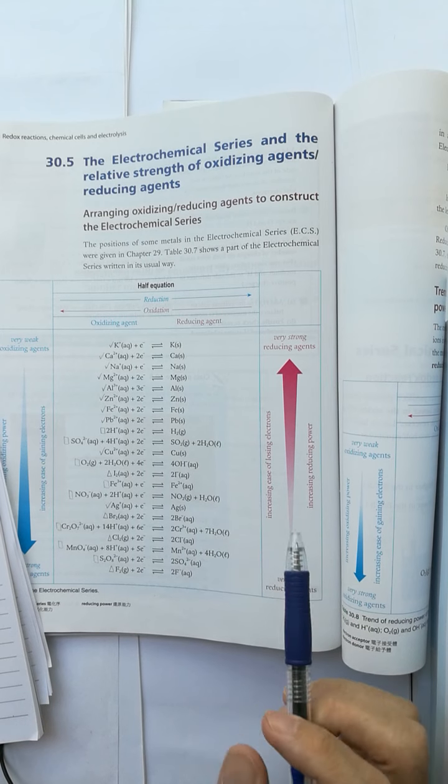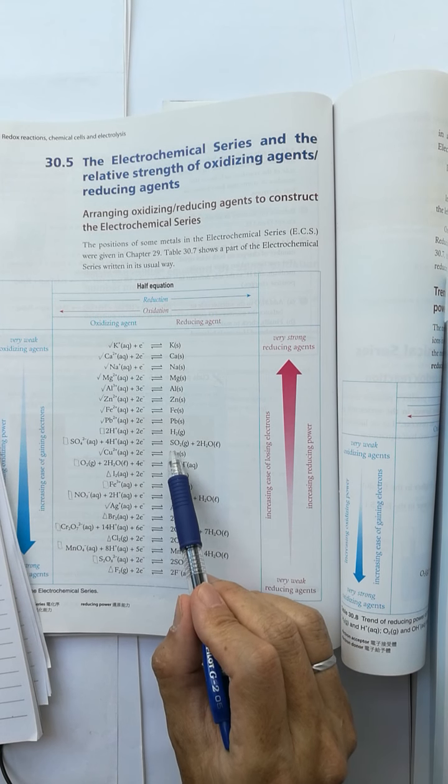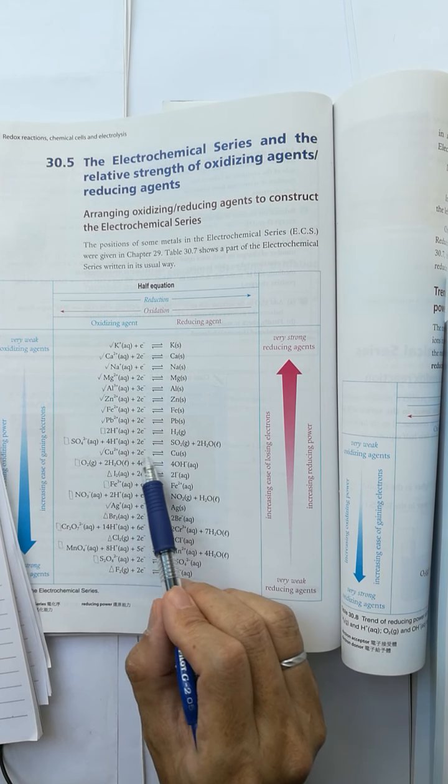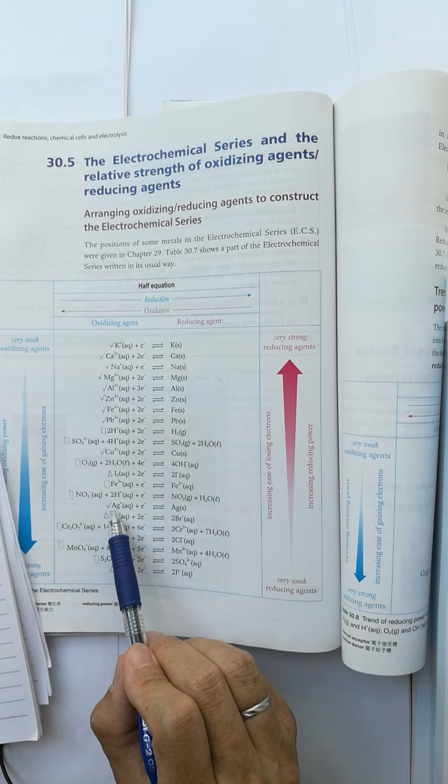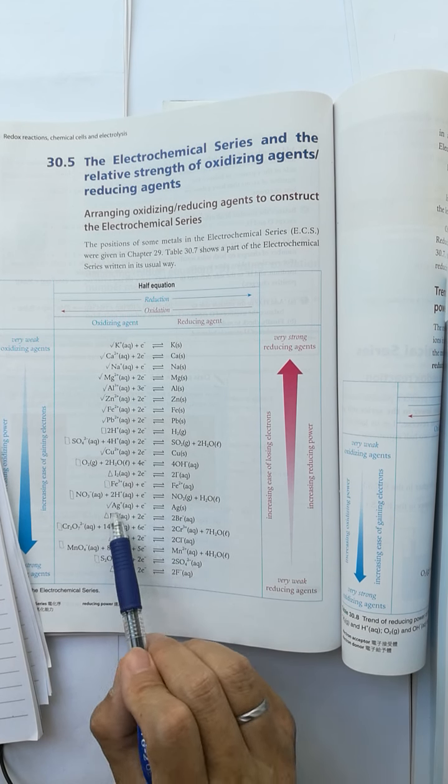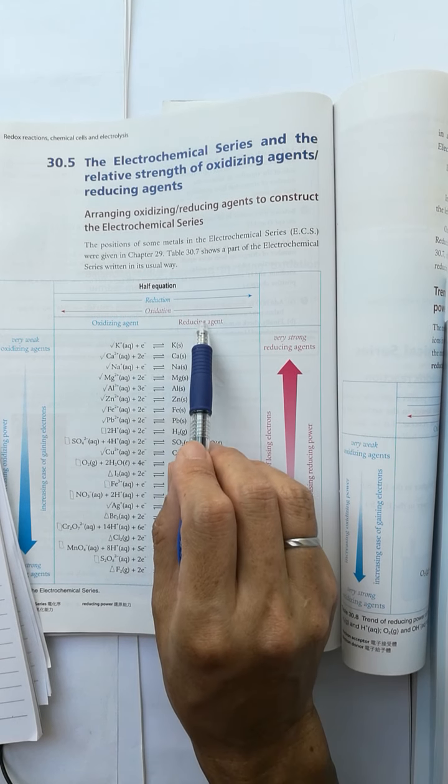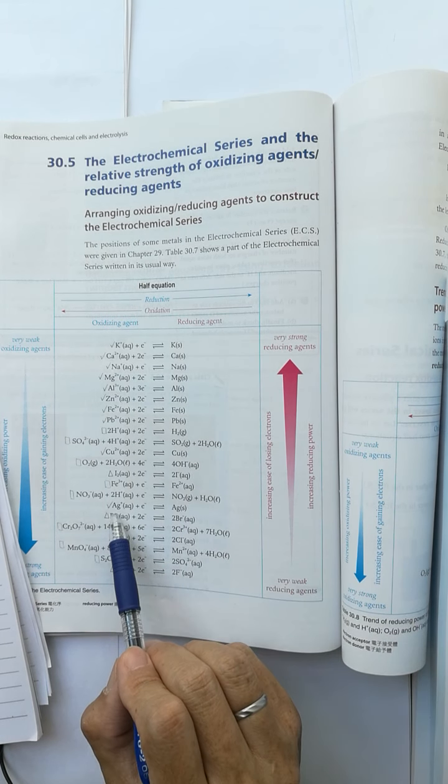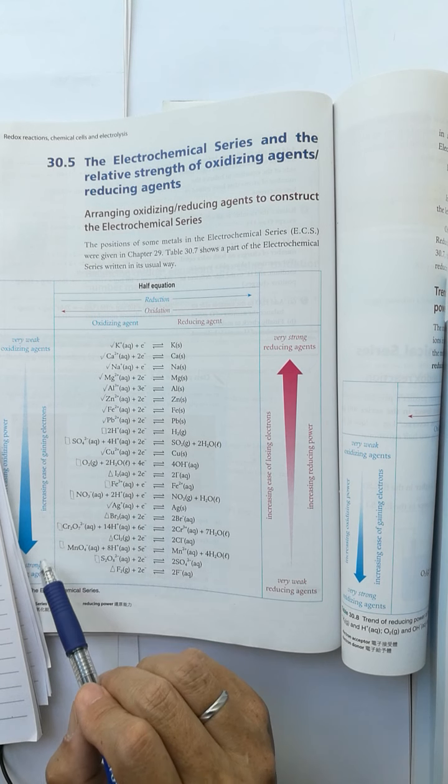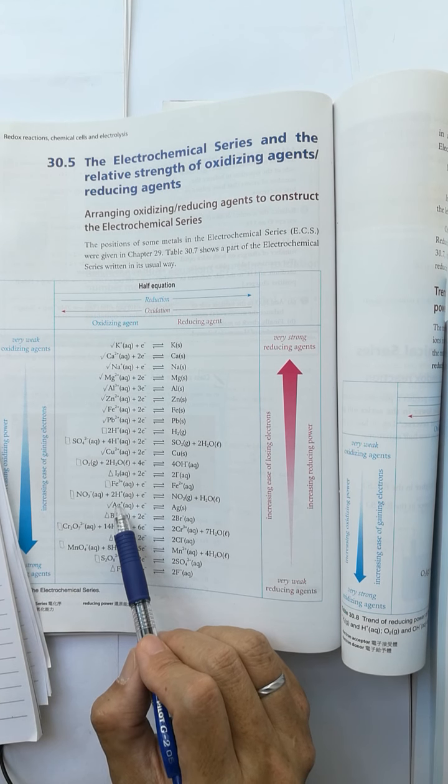Then how to read from the ECS? The copper half equation and silver. Copper is a stronger reducing agent and silver ion is a stronger oxidizing agent.